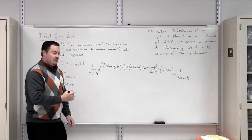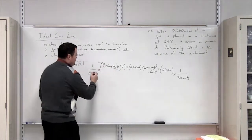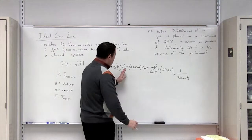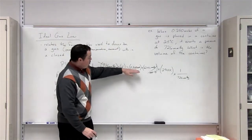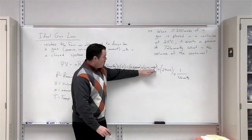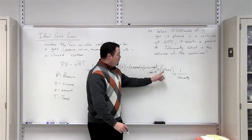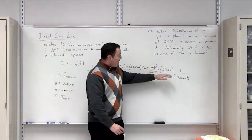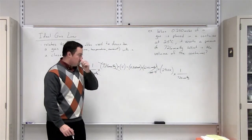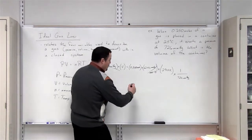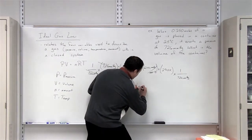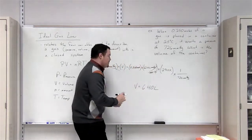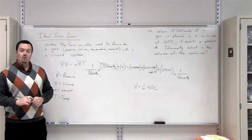On the left side of the equation, our 726 will cancel out. So now we know that volume is equal to 0.250 multiplied by 62.4 multiplied by 298. Then we're going to divide that by 726. When we solve for volume, we find that it is equal to 6.40 liters.